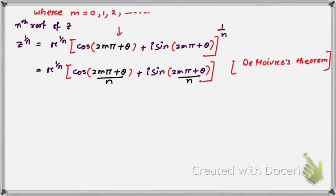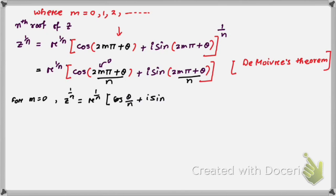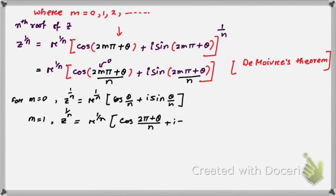For m = 0: z^(1/n) = r^(1/n) [cos(θ/n) + i sin(θ/n)]. For m = 1, we substitute and get the next result. So by putting different values of m, we obtain distinct roots.